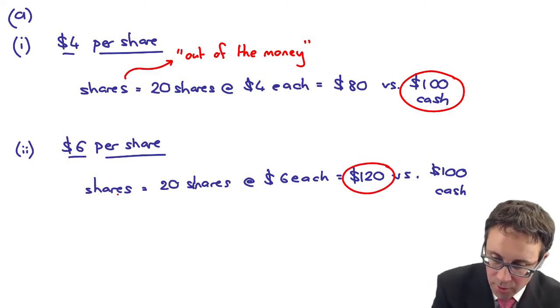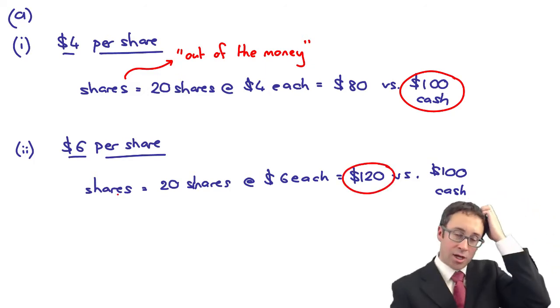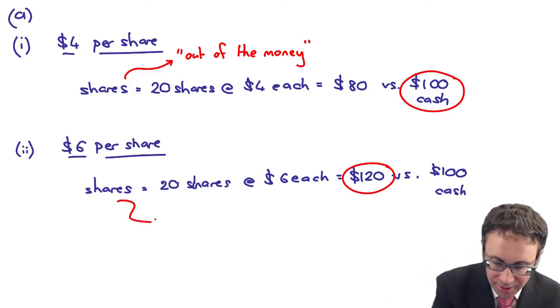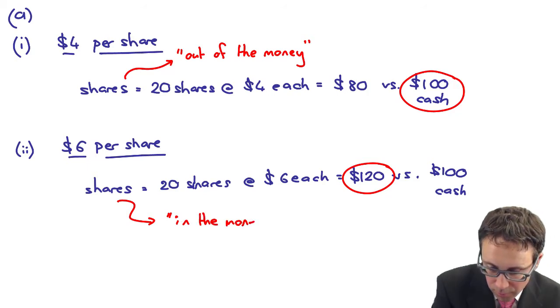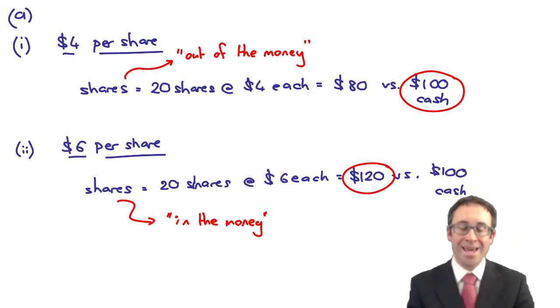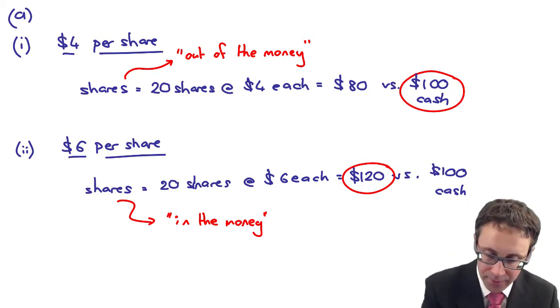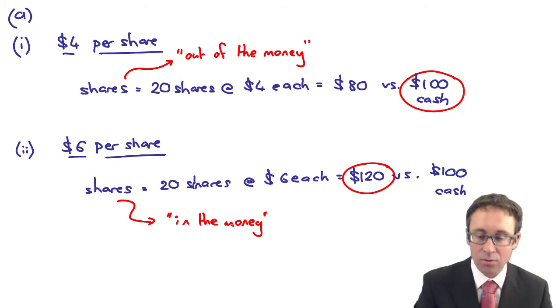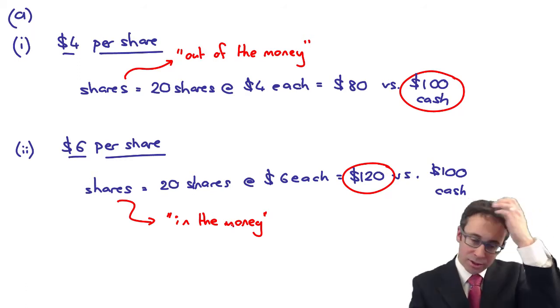So I would have thought there that we would here be taking the shares because they are worth more. If that's the case, as the shares are worth more, this convertible can be referred to as being in the money. You will make more from taking the shares than what you would the cash.